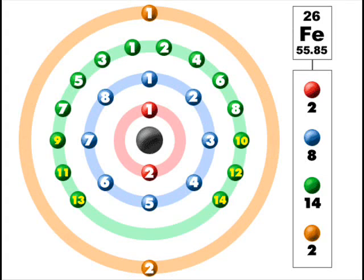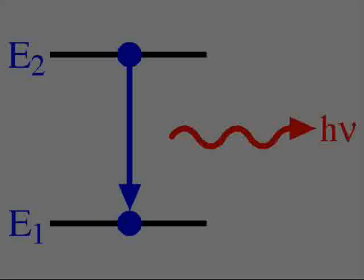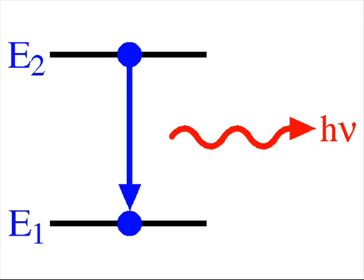Electrons exist in discrete orbital shells when bound to an atom. The further away the orbital shell is from the nucleus, the higher the energy level the electron is in. In a redox reaction, electrons will move from a high energy state to a lower energy state and give off a photon of light as a result.